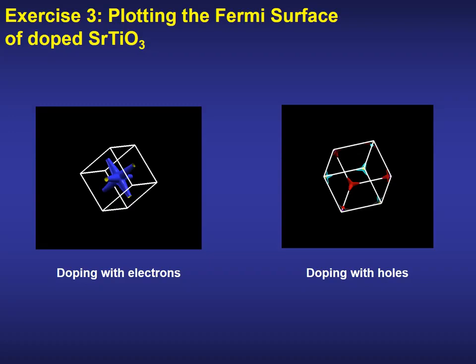Once the Hamiltonian matrix elements are available, we can perform efficient calculations on a very dense grid of K points in a tight-binding-like scheme. This can be used to explore in detail Fermi surfaces. That is the final exercise to be run, involving the plotting of the Fermi surface of doped strontium titanate both with holes and electrons.